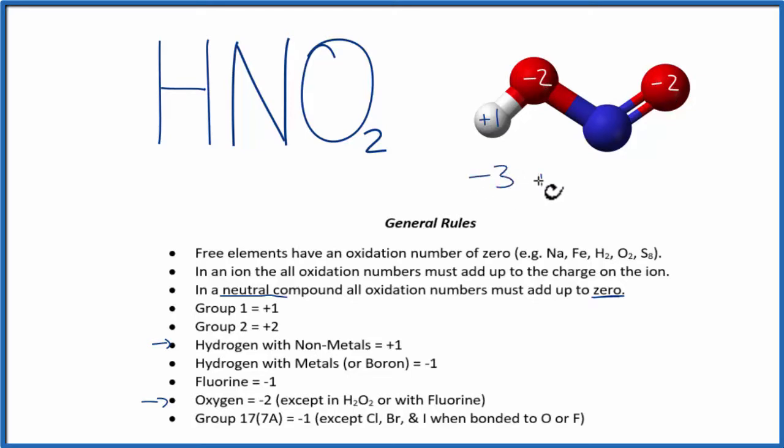Plus some number and that number will be the oxidation number on the nitrogen, those all must add up to zero. So minus three and a positive three equals zero, so the oxidation number on the nitrogen here has to be plus three.